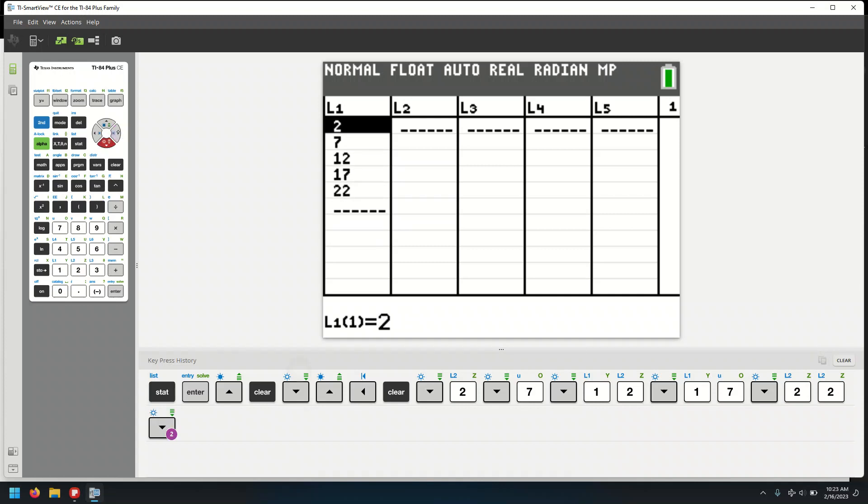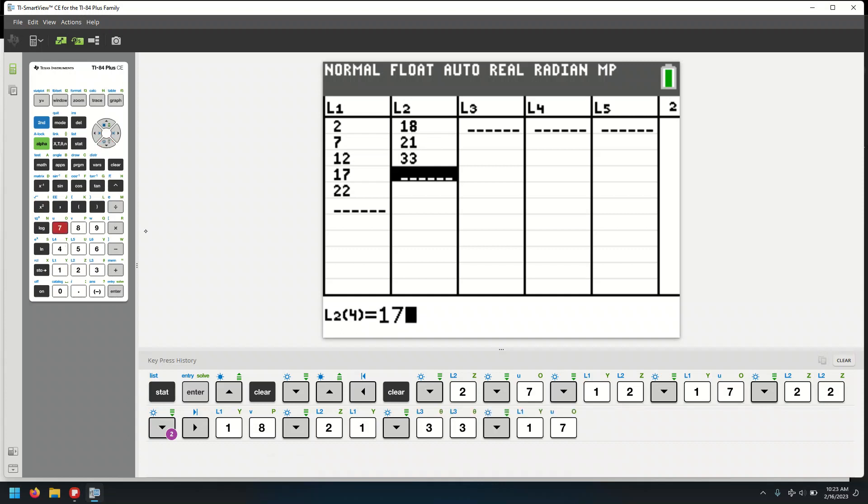The second column, L2, it's going to be the frequencies. In this case, the number of cats for the different classes. That's 18, that's 21, 33, 17, and 5.